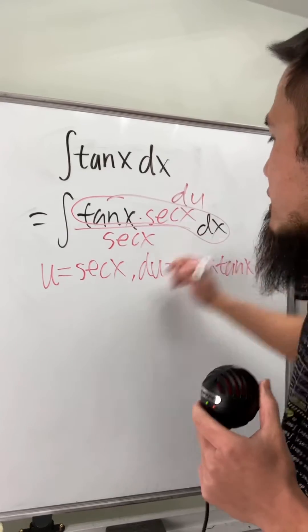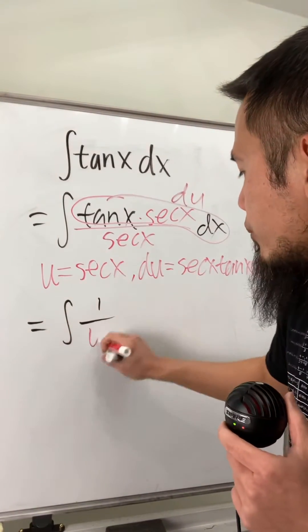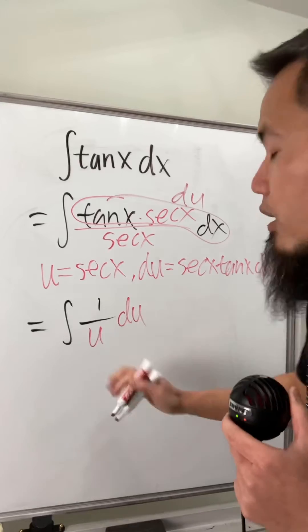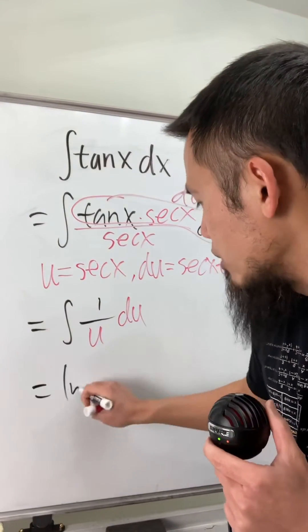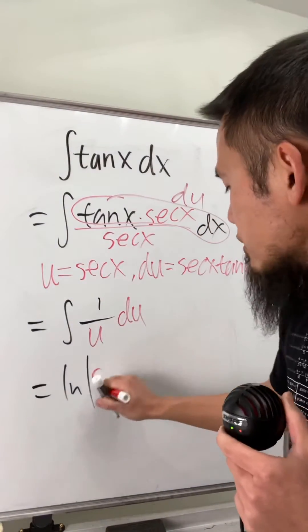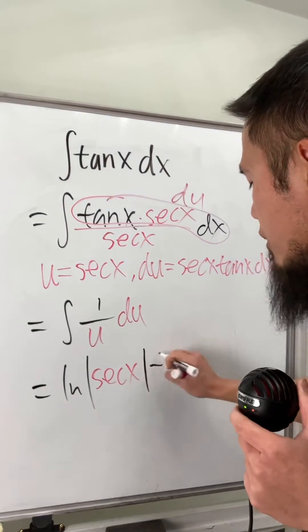Yes, it is. And now you see this is just the integral of 1 over u and then we have the du right here. So the integral of this is just going to be natural log of absolute value of u. u is equal to secant x, so I'm just going to put that down right here and we are done plus c.